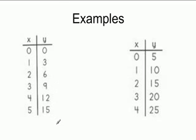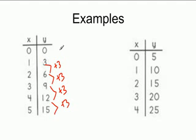So we have 3, 6, 9, 12, 15. So to get from 3 to 6, you're going to add 3. 6 to 9, add 3. 9 to 12, add 3. And 12 to 15, add 3. So our rule is plus 3.